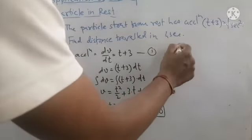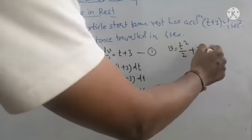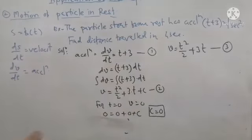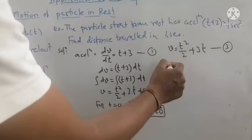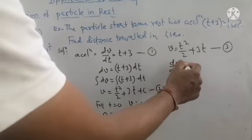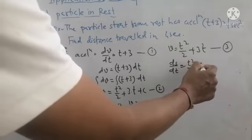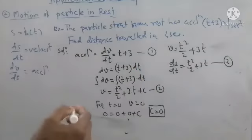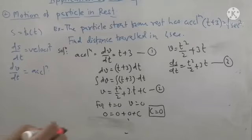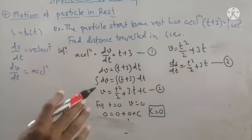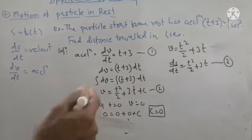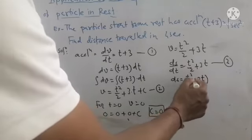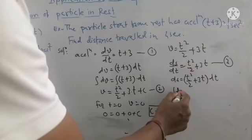So v = t squared by 2 plus 3t. Since velocity is also ds/dt, we now have ds/dt = t squared by 2 plus 3t as another differential equation. Again applying the variable separable method: move dt to the right-hand side and take integration on both sides.